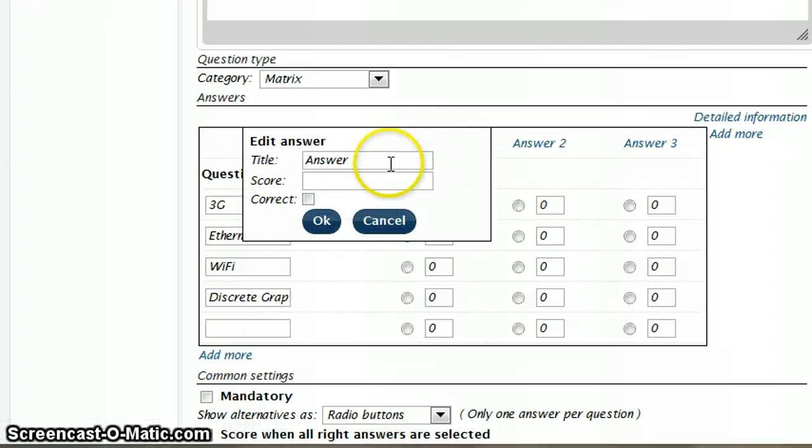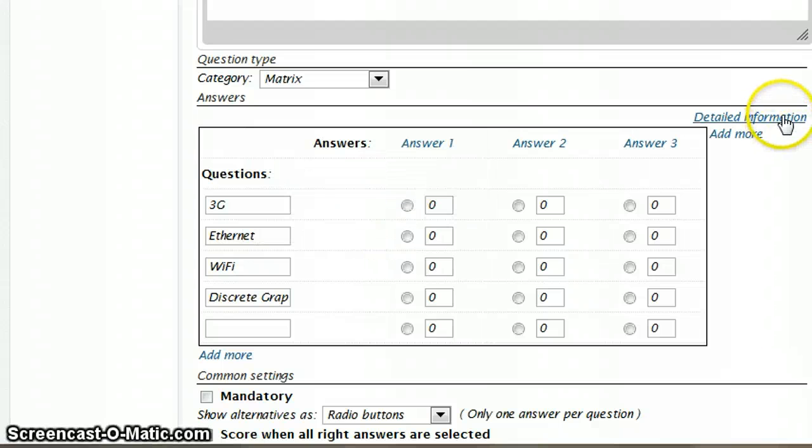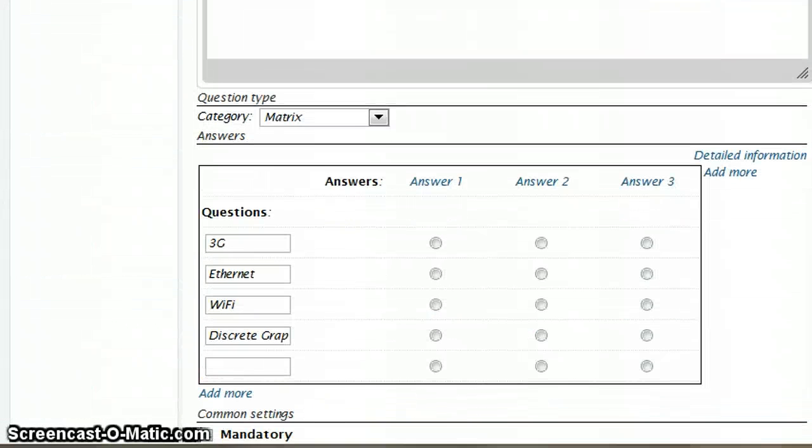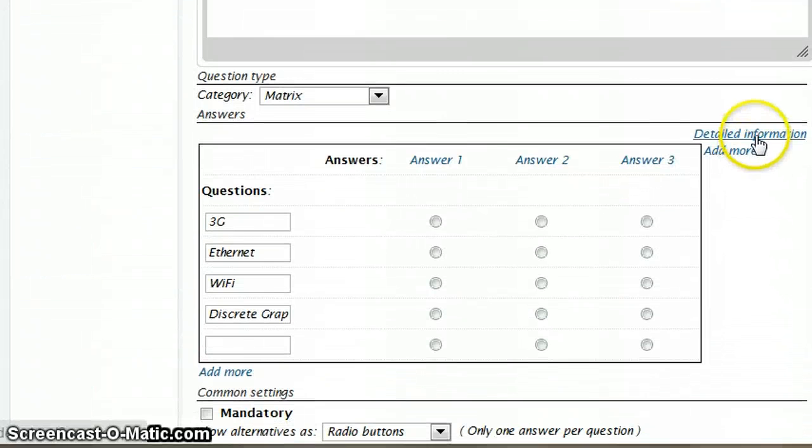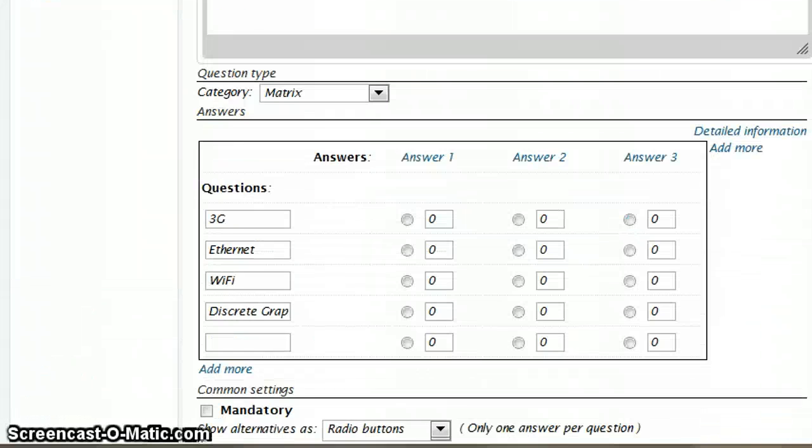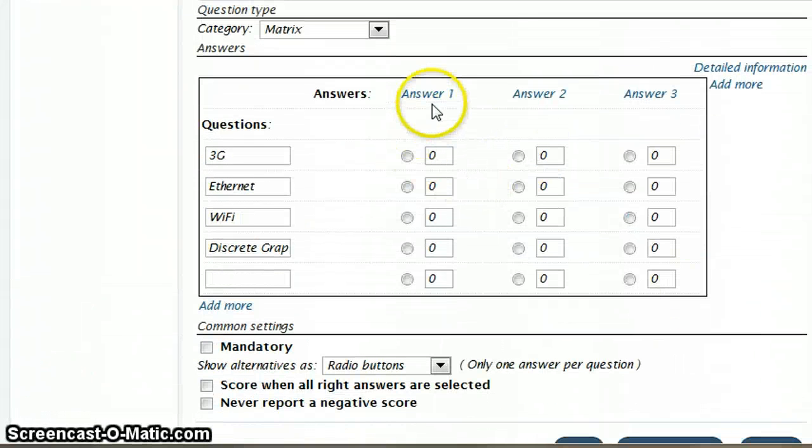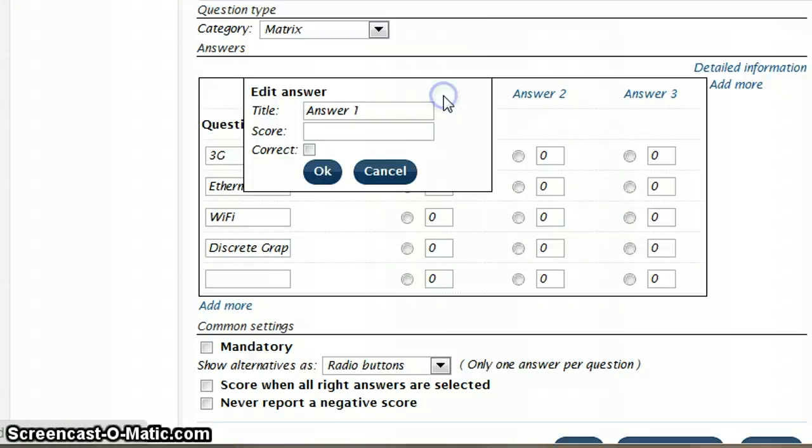So where it says answer 1, I've just clicked. The other thing that I've got selected is detailed information. Detailed information gives you these boxes with numbers next to it. So I'm going to click on answer 1 and change that to mobile device.